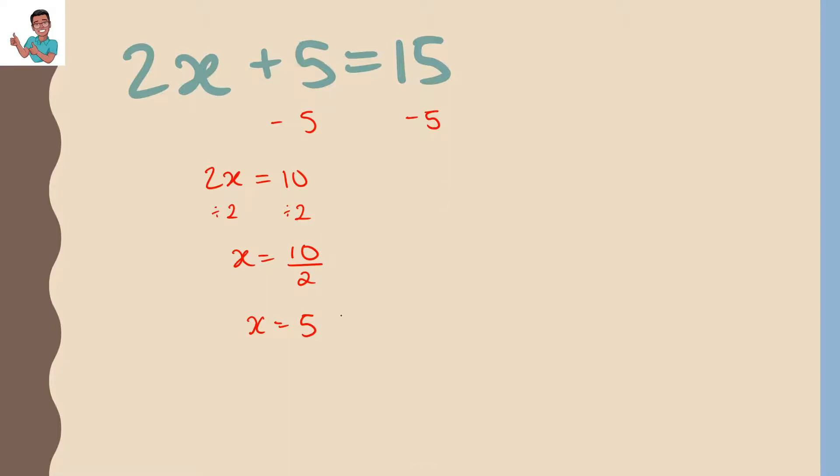We can check our answer by substituting the 5 back into the x. So we have 2 times 5 plus 5 equals 15. 2 times 5 is 10 plus 5, and 10 plus 5 is 15. We know our answer is correct.